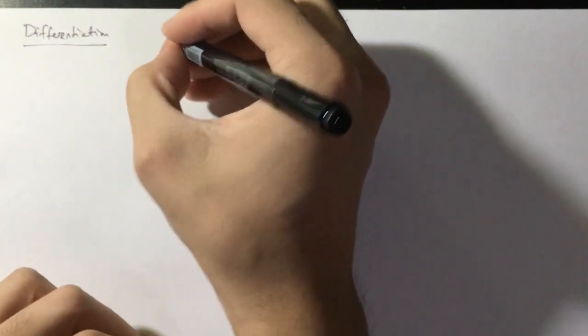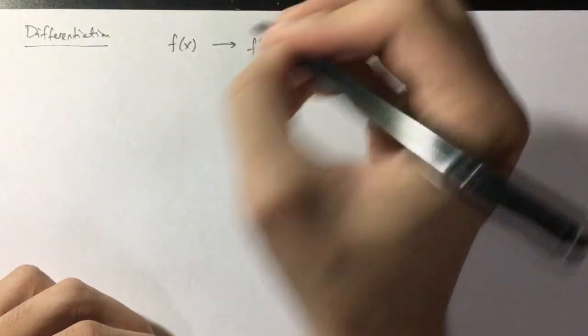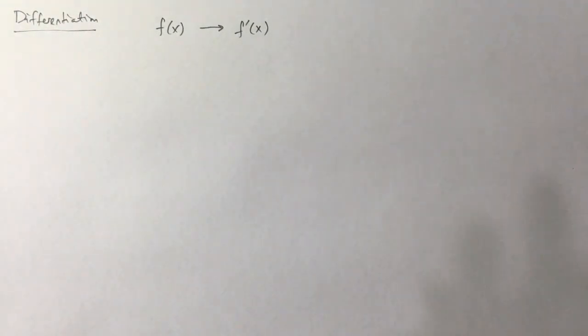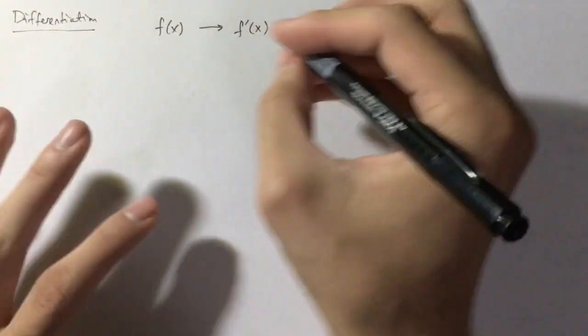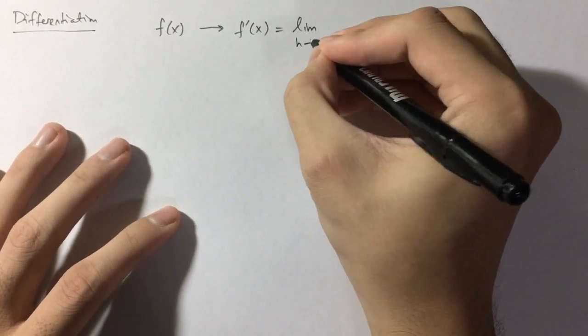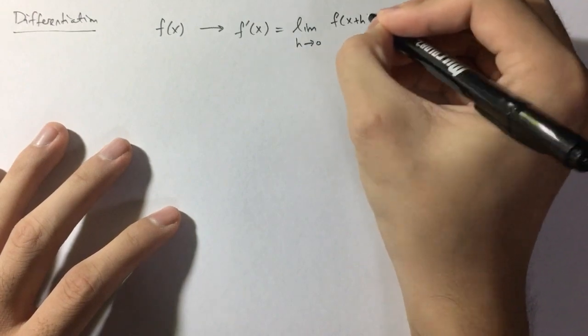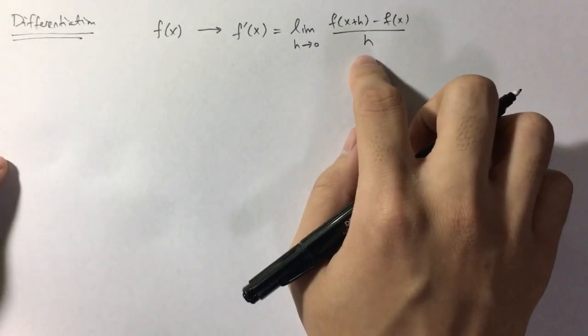So how would it look to approximate something or get an approximate solution? Let me give you an example. Let's consider the case of numerically differentiating a function. What is differentiation? You have a function f of x, and you want to find what its derivative f prime of x is. So what is the definition of a derivative? We know that f prime of x is equal to the limit as h approaches 0 of f of x plus h minus f of x, all divided by h. That's the definition of differentiation.